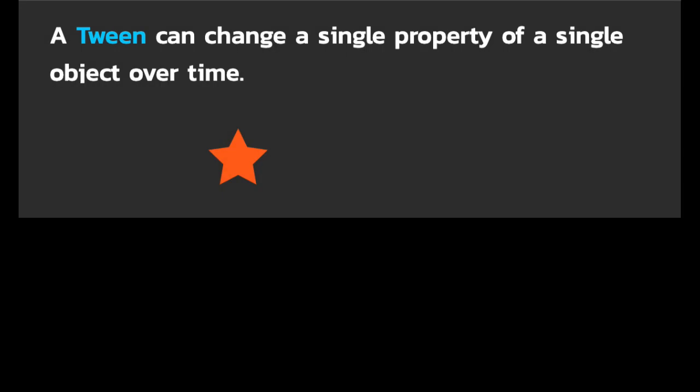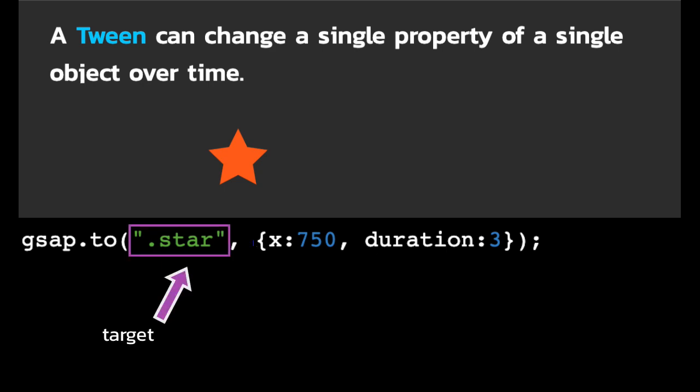In its simplest form, a tween can change a single property of a single object over time. So let's say we have this star on the stage here and we want to move it over to the right. We might write code that looks like this. This is GSAP's to method. Basically what it does is it takes the object that we specify and it animates its properties to the values we specify. The first parameter is what we refer to as the target. In this case, we're passing in a very simple string selector that's going to select every element with a class of star.